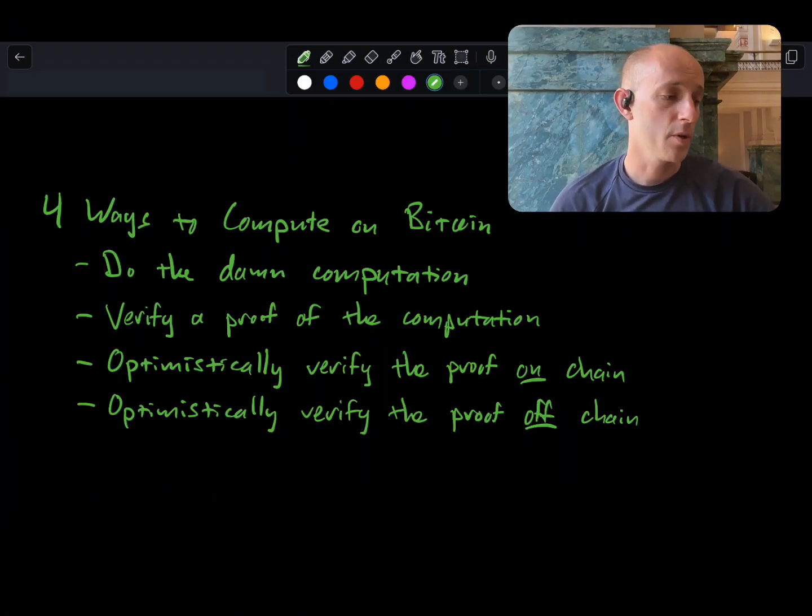So let's look at four different ways that we can compute on Bitcoin. The first is that we just do the damn computation in Bitcoin script. The second is that we construct a proof that the computation is correct and verify that proof. The third is that we generate a proof of the computation, but we optimistically verify it on-chain. And the fourth is that we generate a proof of the computation and then optimistically verify it off-chain. Let's look at each of these.